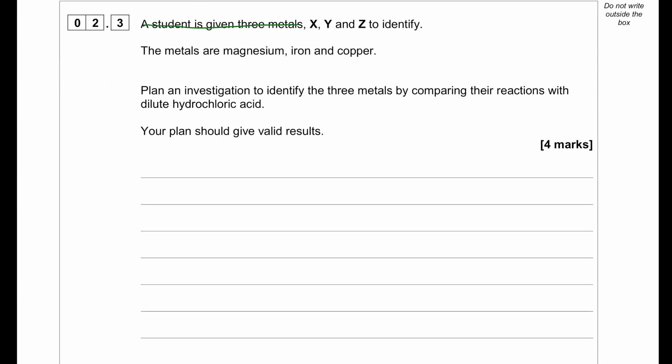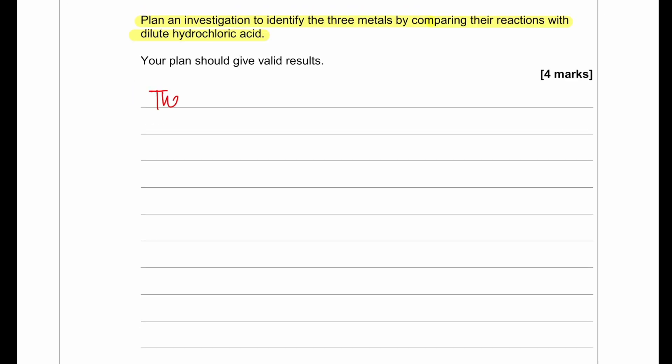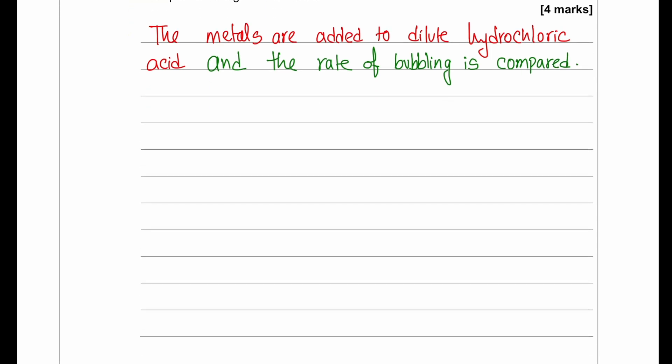A student is given three metals X, Y, Z to identify - the metals are magnesium, iron, and copper. Plan an investigation to identify the three metals by comparing their reactions with dilute hydrochloric acid. When reacting these metals with dilute hydrochloric acid, first thing, copper does not react with dilute hydrochloric acid. When we react copper with dilute hydrochloric acid, there will be no reaction, no temperature change, and no bubbles being formed.